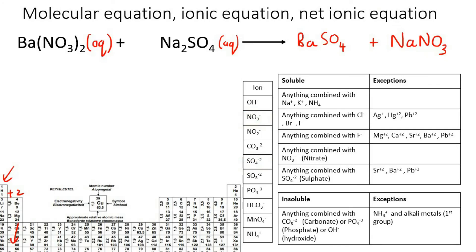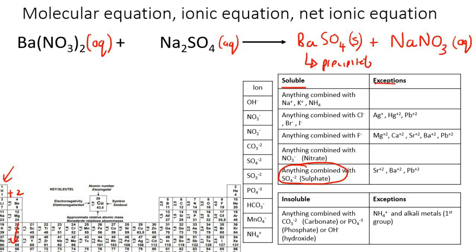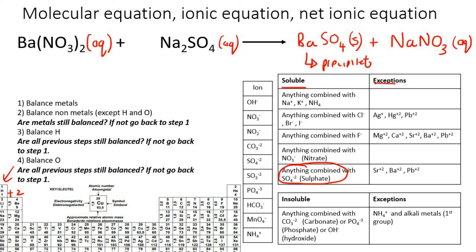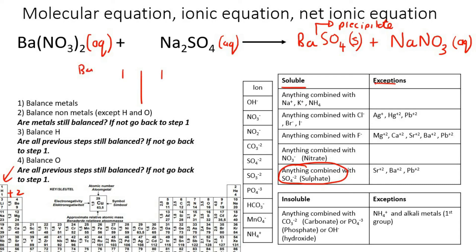Let's check solubility: all nitrates are soluble, so NaNO3 is aqueous. For BaSO4 — anything combined with sulfate is soluble except if it's barium, strontium, or lead. We have barium, so BaSO4 is insoluble — a solid, a precipitate. Now all the inside subscript numbers are balanced, so we balance the front coefficients, starting with the metals. Barium: one on the left, one on the right. Sodium: two on the left, one on the right — so we put a 2 in front of NaNO3.